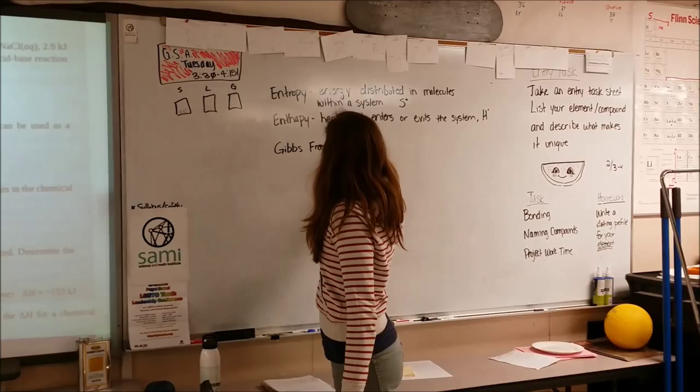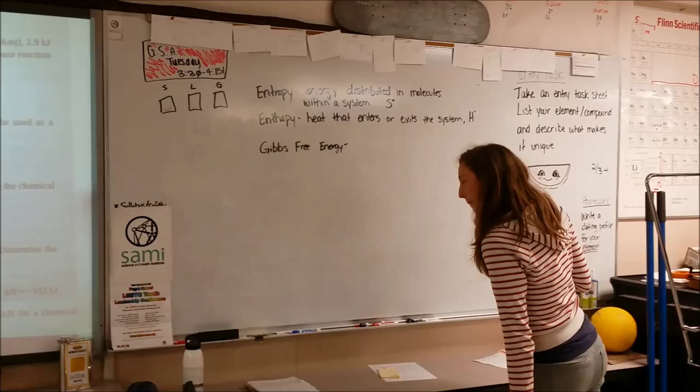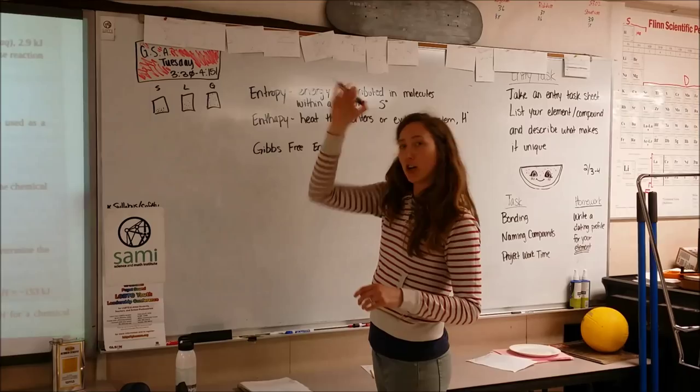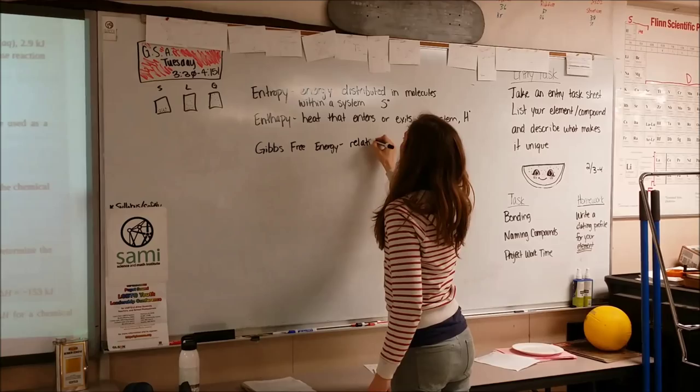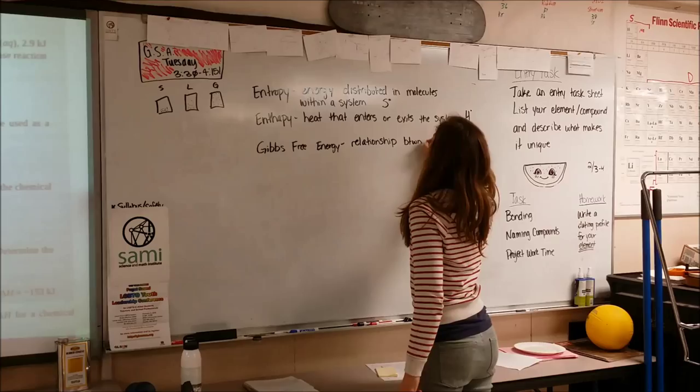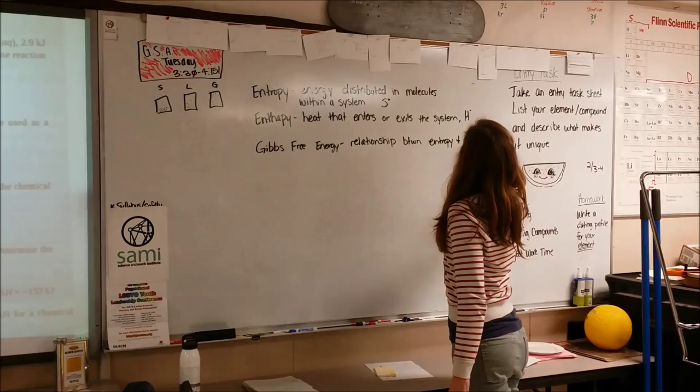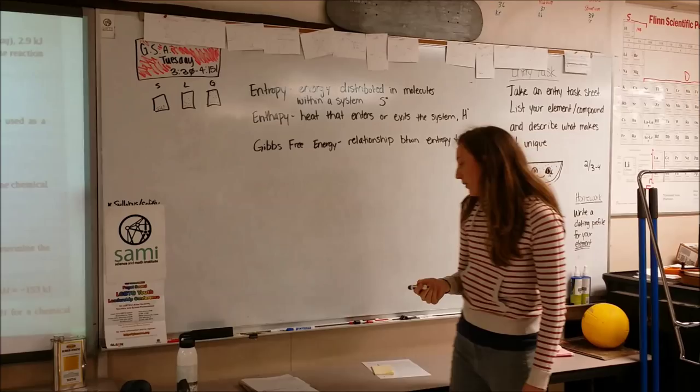Gibbs free energy is a function of this relationship, and we're going to get into that later. It's confusing. But this is the relationship between entropy and enthalpy. So we've got three definitions, and the last thing I want you to jot down is the equation that summarizes their relationship.